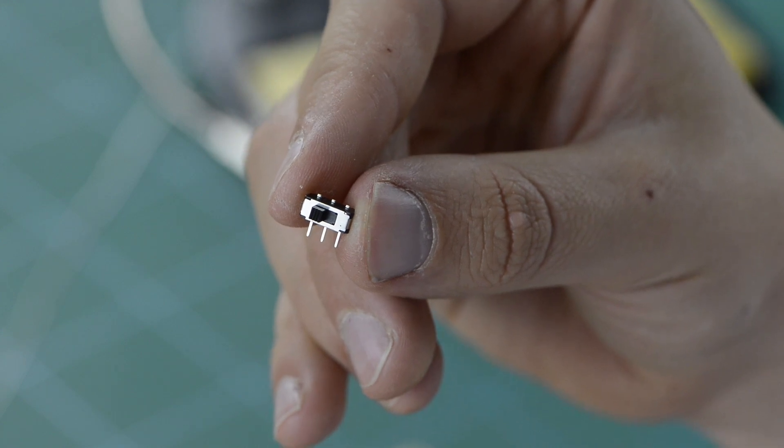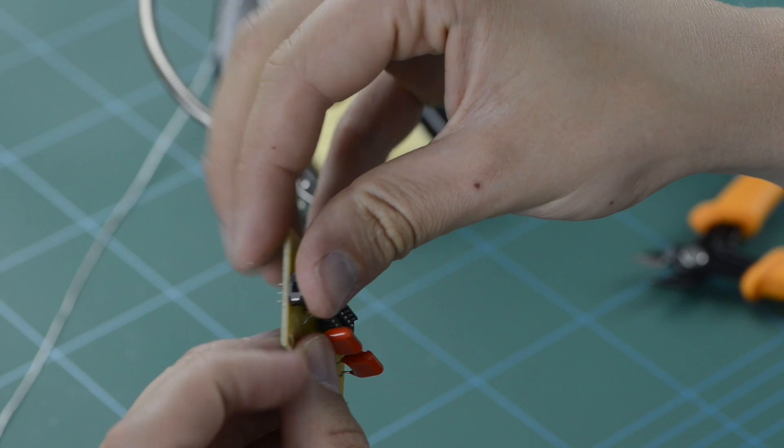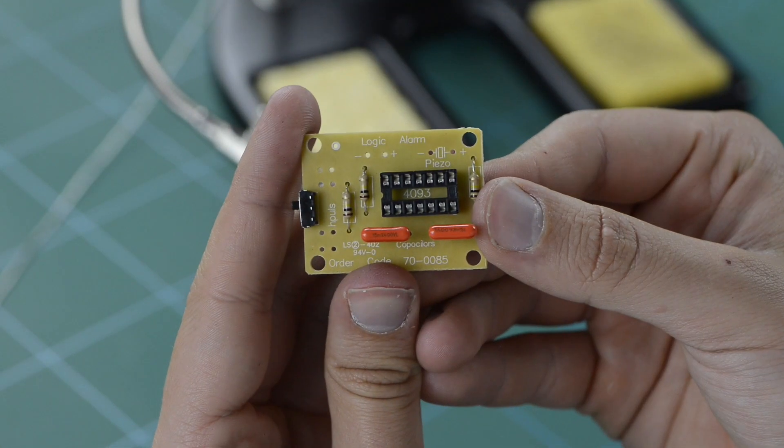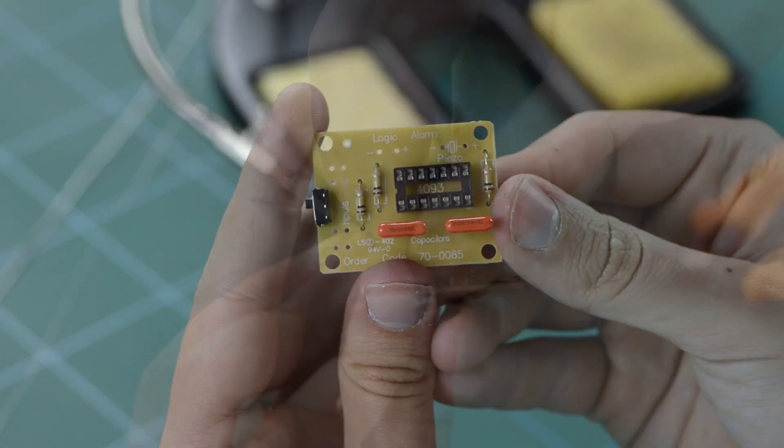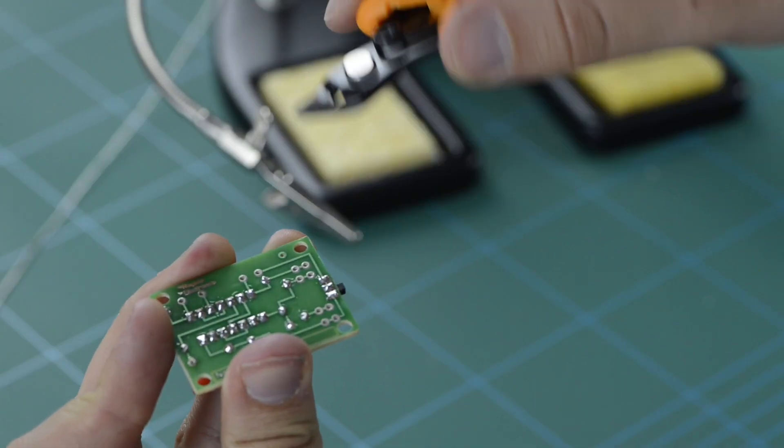Next, you'll need your miniature slide switch. Place this component through the holes designated on the board, ensuring that the slide switch faces away from the board and bend the legs back to prevent it from falling out. Solder into place and remove any excess material.